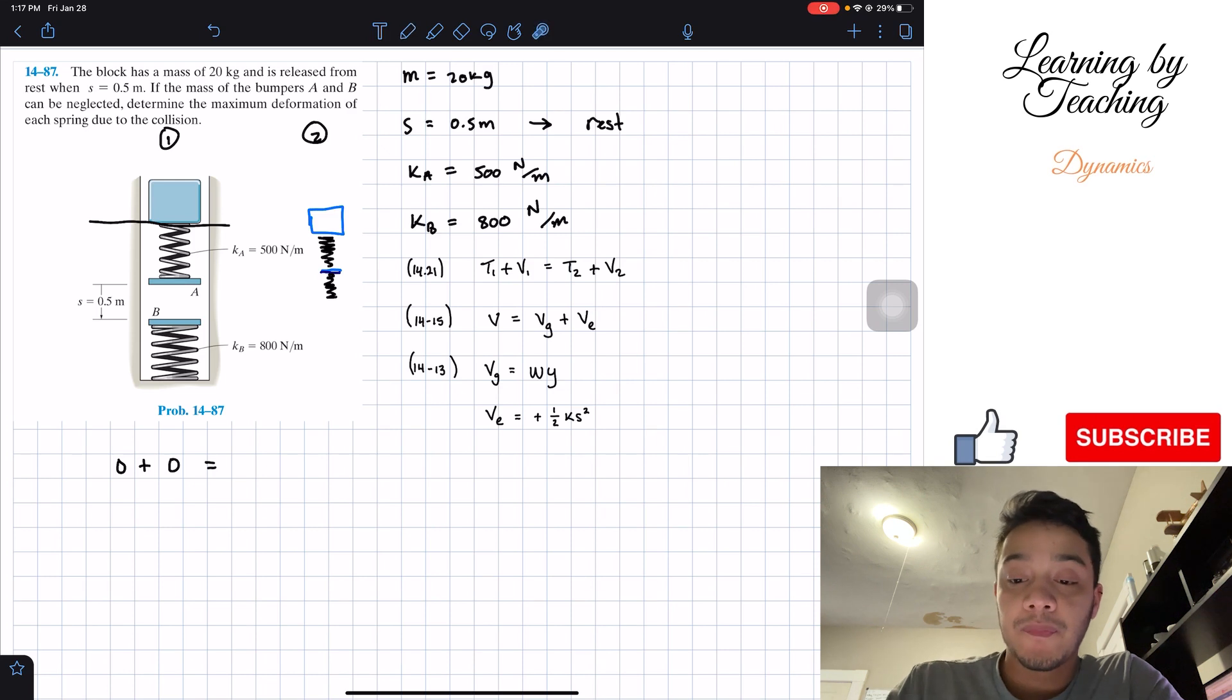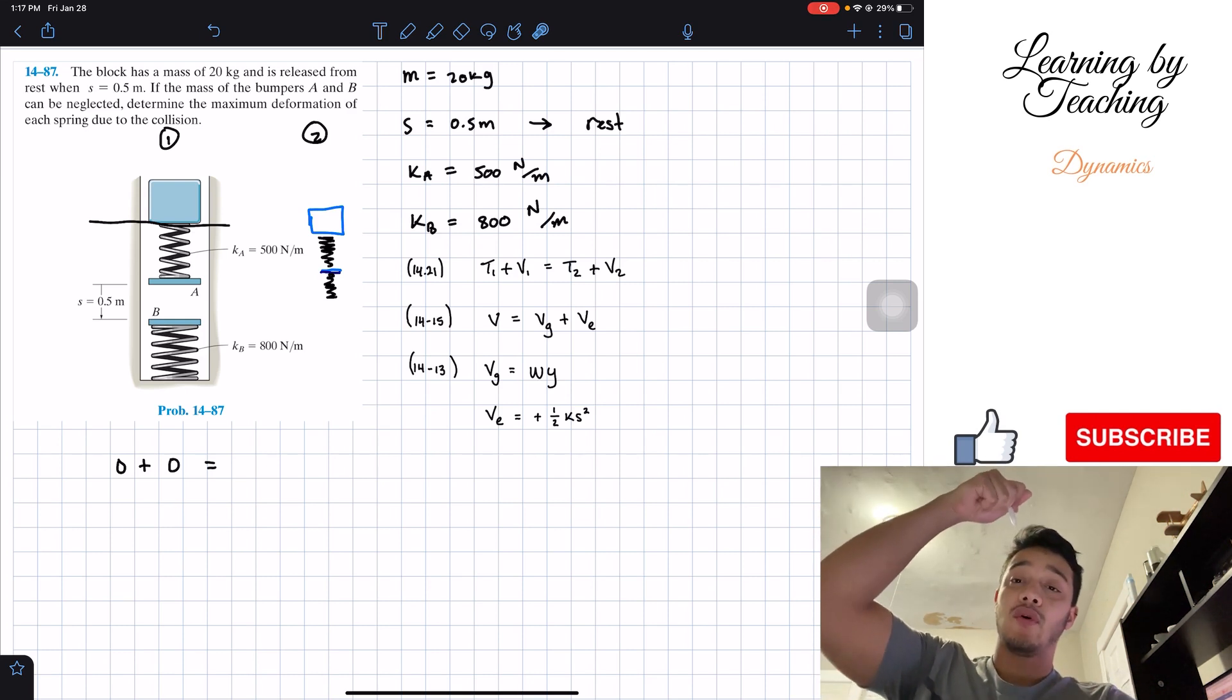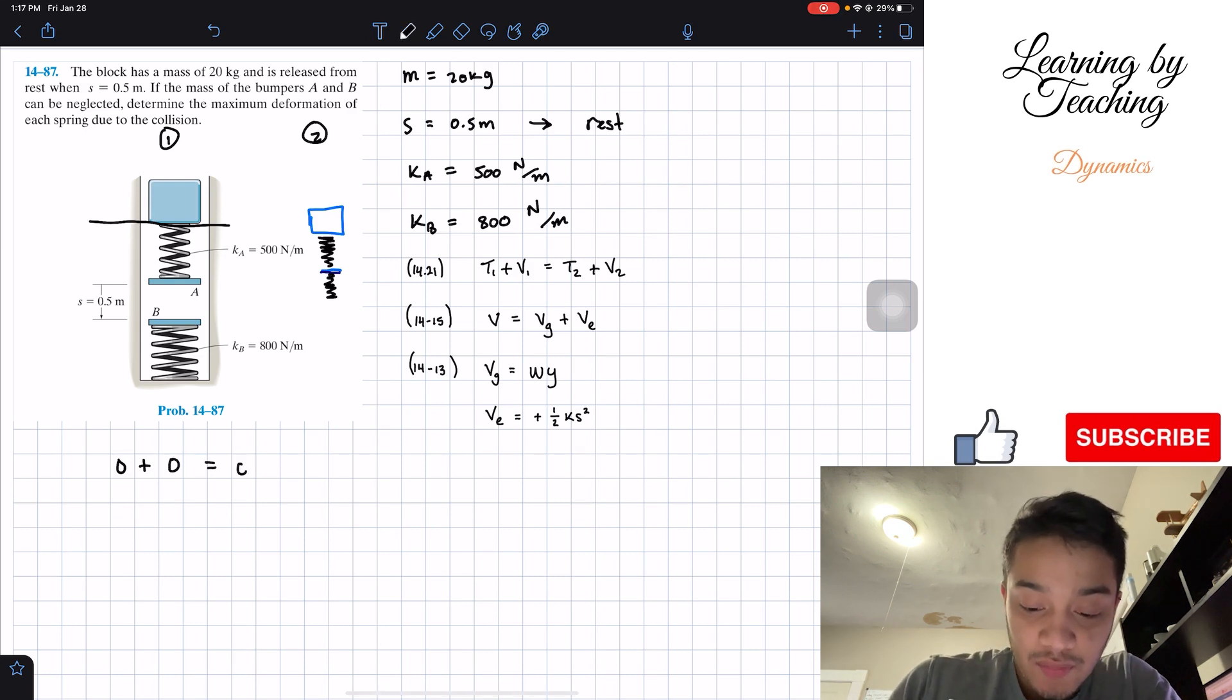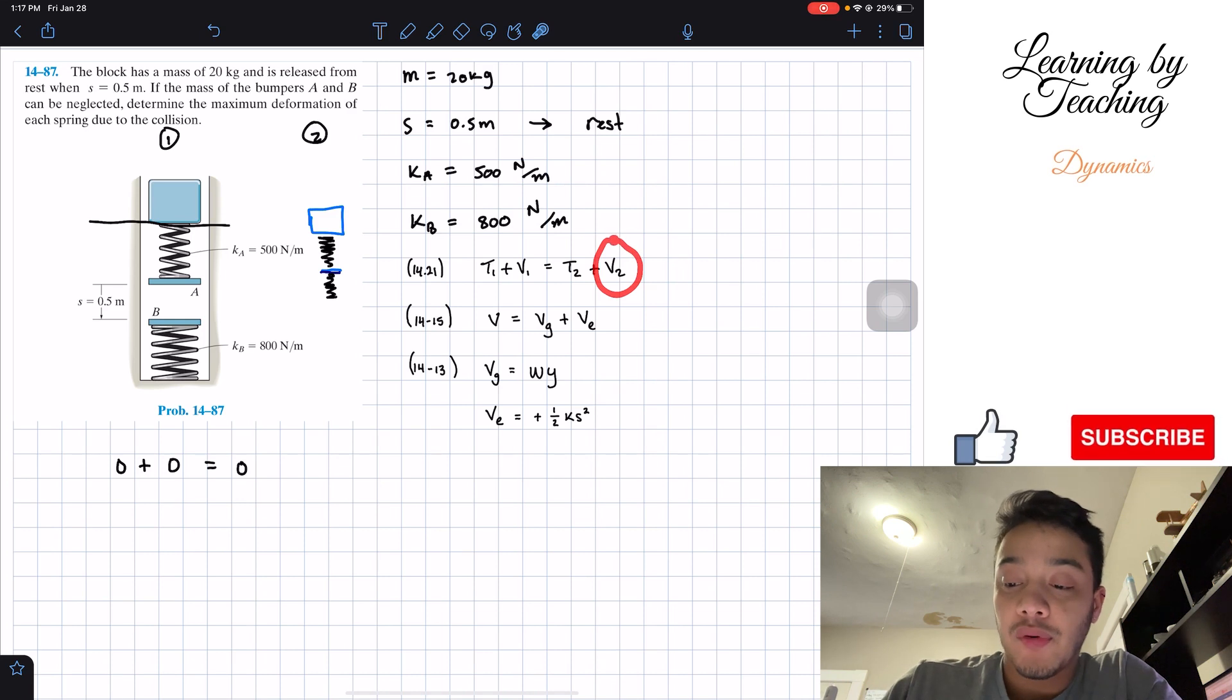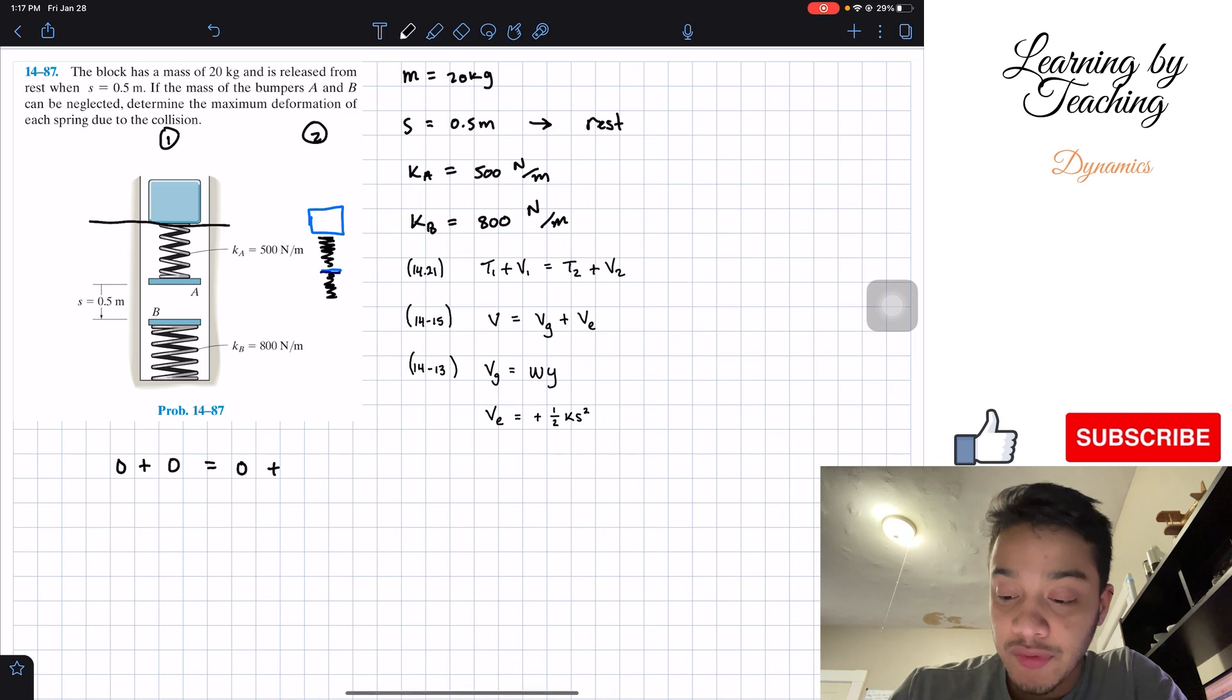T2 happens when these two springs are compressed at their maximum and they are equal to each other. The force in them are equal to each other, therefore there's no more velocity. Instead of going down, it stops and it's about to start pushing the weight up due to the forces of the spring. Therefore the velocity is equal to zero as well in this second position. However, the potential at point 2 does change because we have a different height and the springs are compressed.